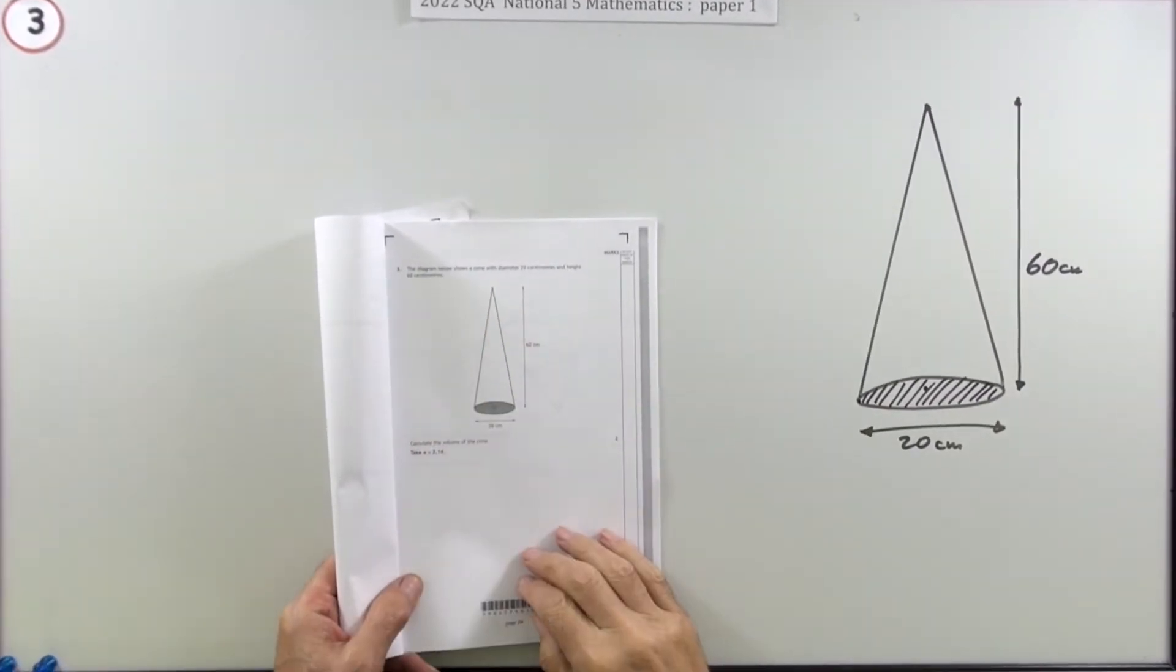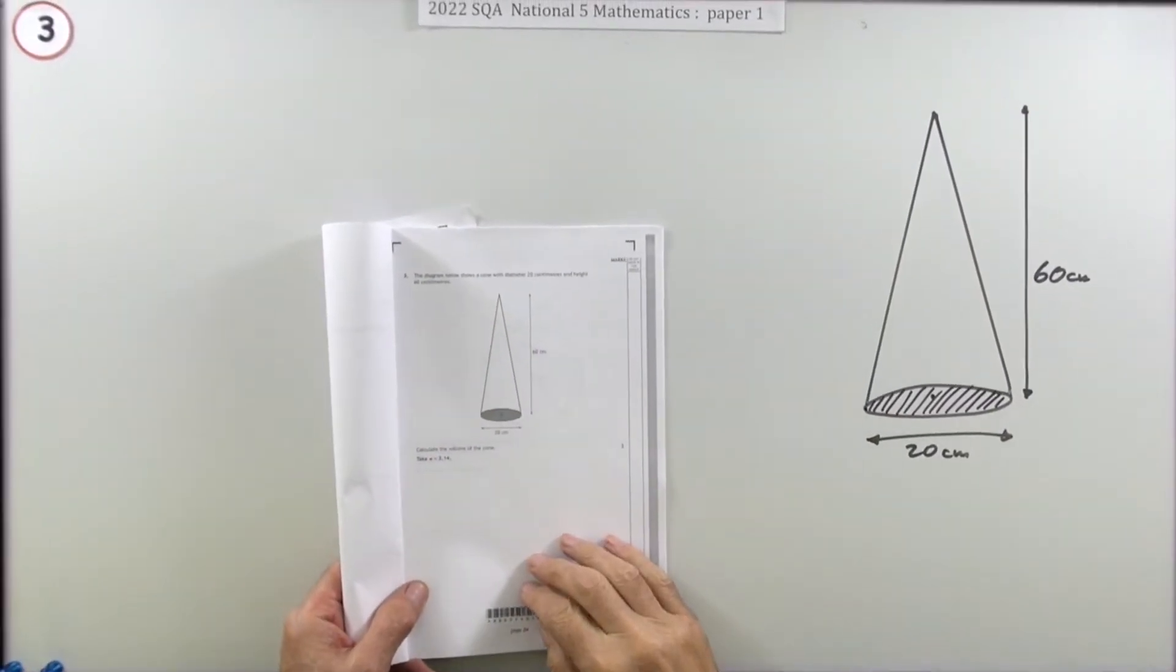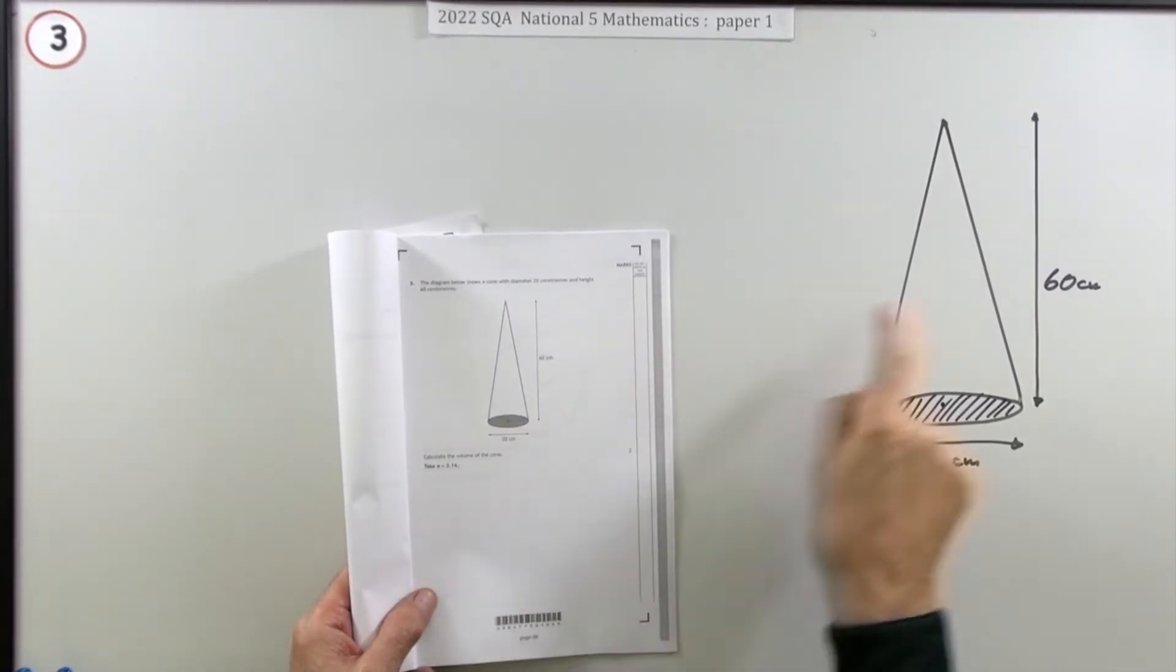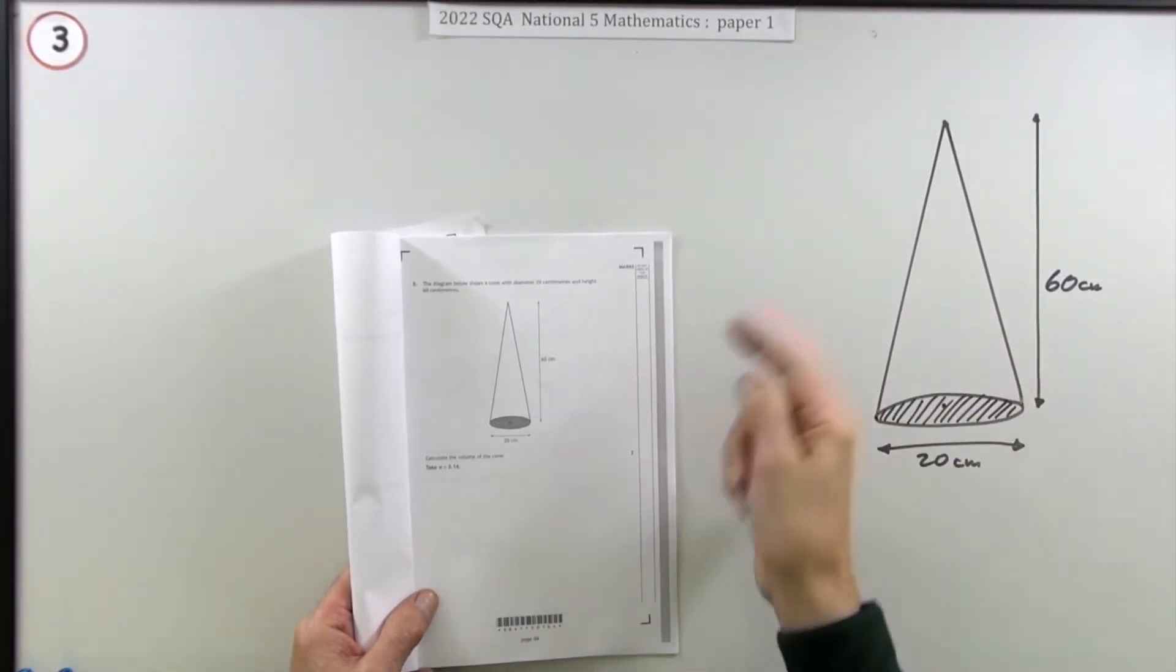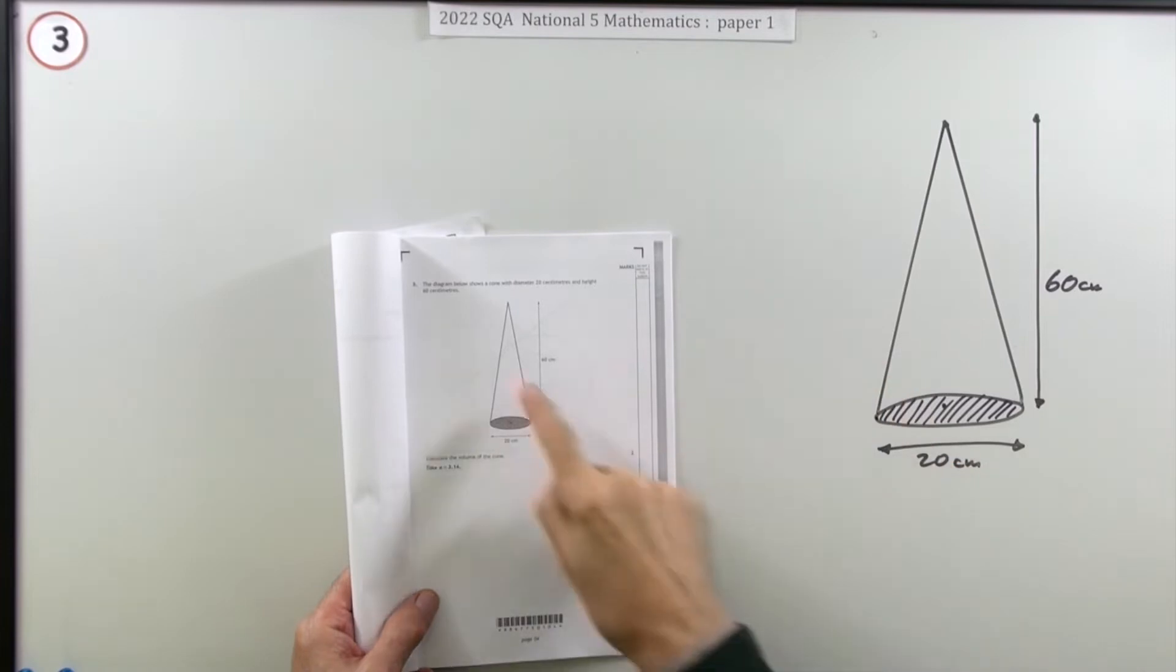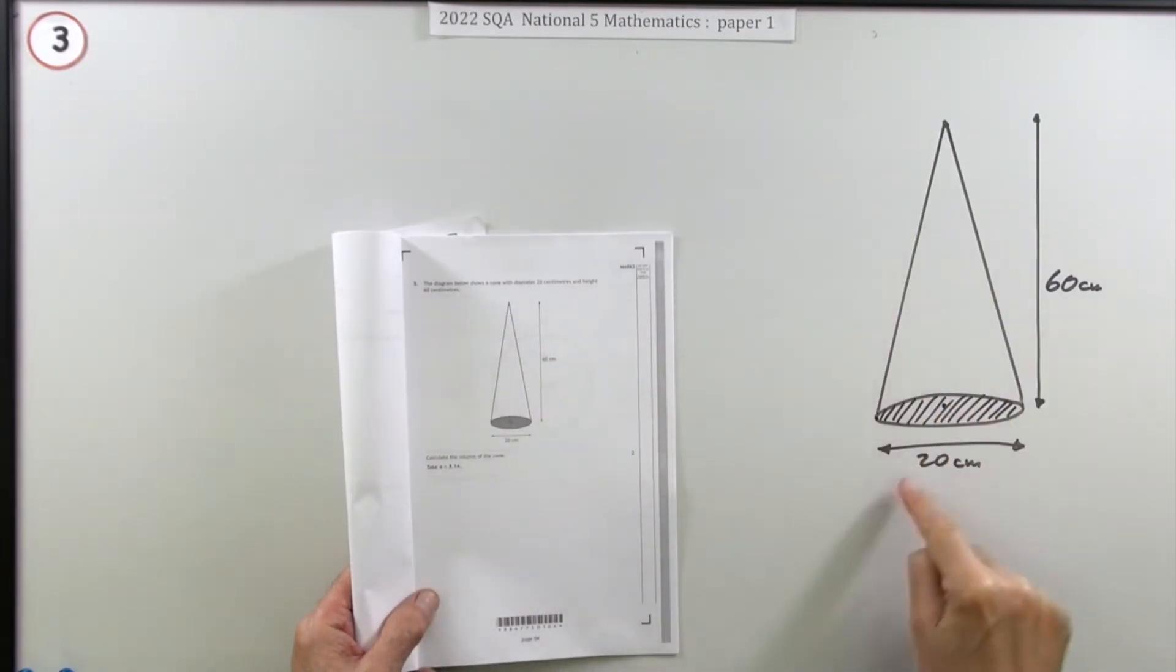Number three from the 2022 National 5 paper one, just a little two-mark question. There's a cone, volume of a cone - you'll find the formula at the front if you don't know it. The diagram shows a cone with a diameter all the way across the circle of 20 and a height of 60.